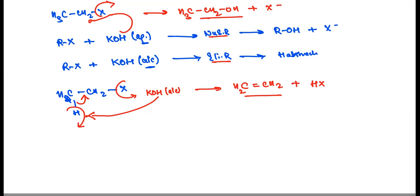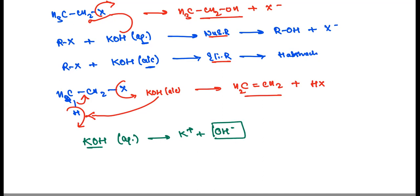So what is the reason behind it? We will understand this today. When your base KOH is present in aqueous medium or water medium, what happens is that K plus and OH minus dissociate completely. This means that the OH minus is fully available. Everyone knows potassium hydroxide is a strong base, and in the presence of water, complete dissociation occurs — the whole OH minus is available, and OH minus is a good nucleophile. So being a good nucleophile, it performs a nucleophilic substitution reaction, and the final product you get is alcohol.